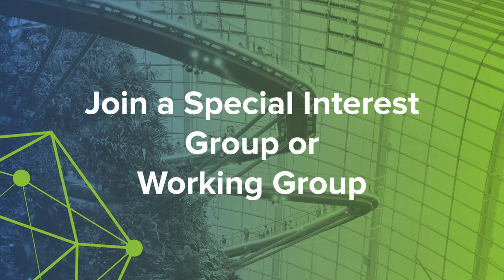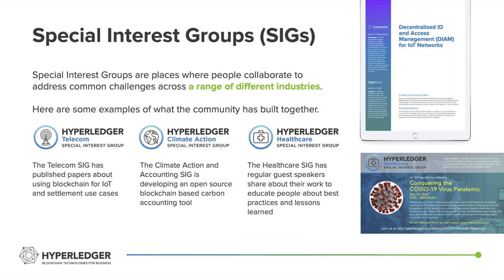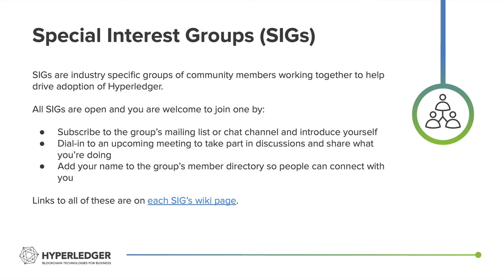In addition to coding and documentation efforts going on in the community, Hyperledger also has special interest groups and working groups. Our special interest groups are places where people collaborate to address common challenges with applying blockchain and DLT technologies in a range of different industries. For example, we have a telecom special interest group that has written papers about how blockchain can be used in different telecom use cases. We have a climate action and accounting special interest group working on a collaborative coding project to build tools to help with carbon accounting. And we also have a Hyperledger Healthcare Special Interest Group that has done a series of guest presentations with speakers from around the world sharing about the work they've done with blockchain in the healthcare space.